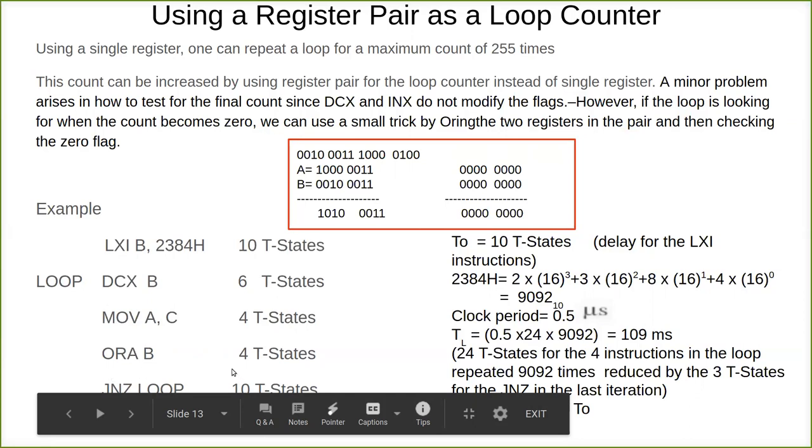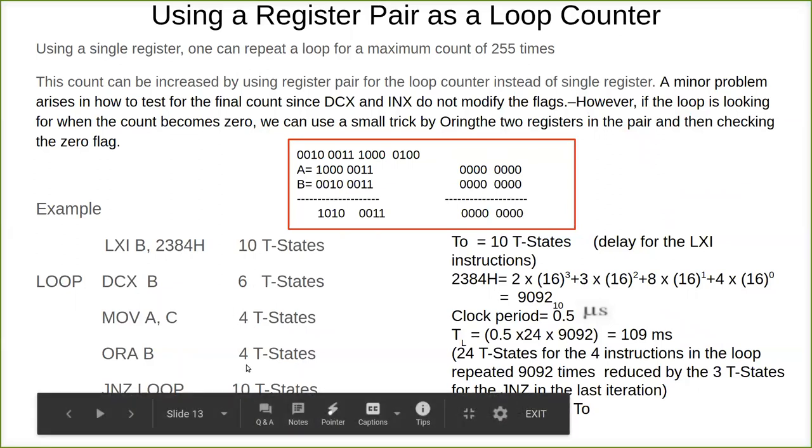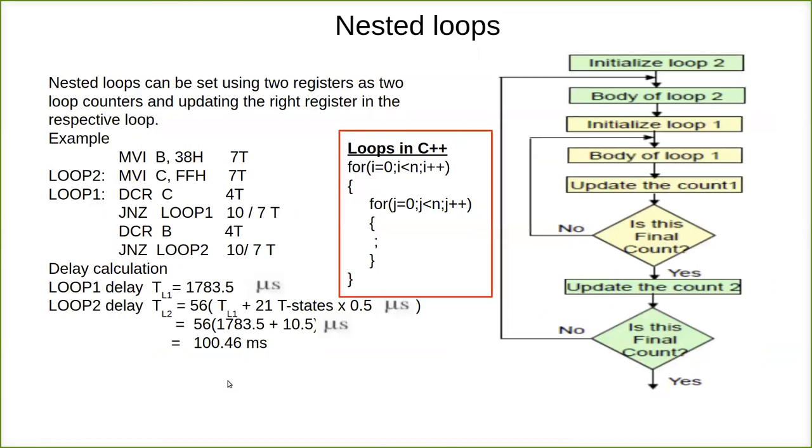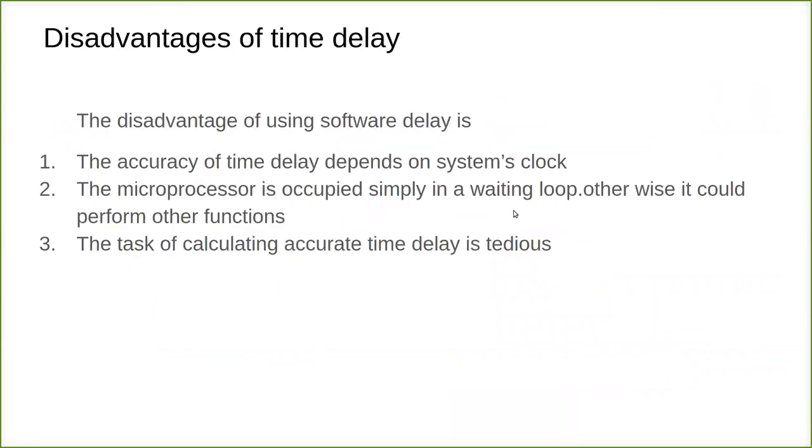No operation, the execution of that itself will take 4T states. So 4T states into the clock period. By introducing more instructions or dummy instructions like that, you can increase the time delay of a loop.